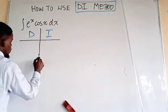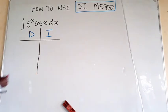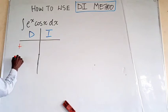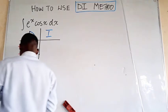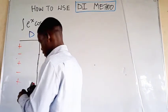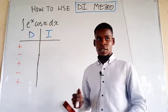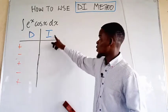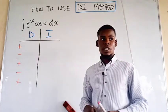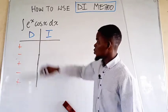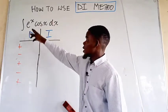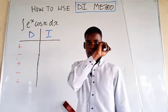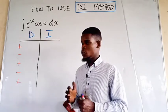The next thing we do is put down the signs in front — plus, minus — just alternating like that. This D here stands for differentiate, and this one is to integrate. So we decide which function to differentiate and which function to integrate, given that these are a product of two functions. It's now your choice to make.